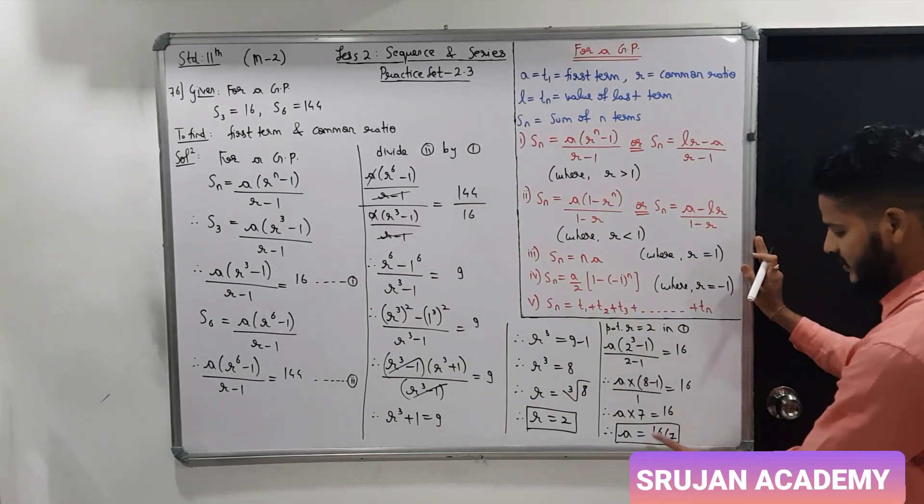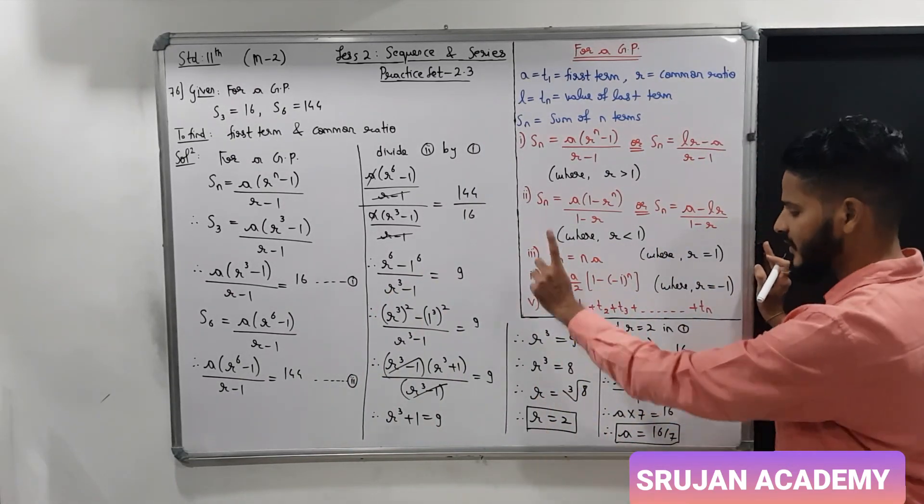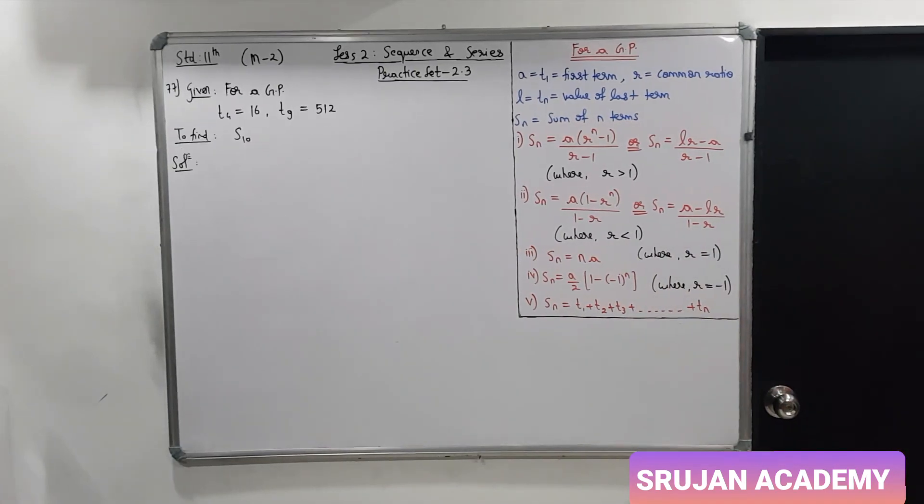So this is our value of the first term. Value of the first term is 16 by 7 and your common ratio R is 2.